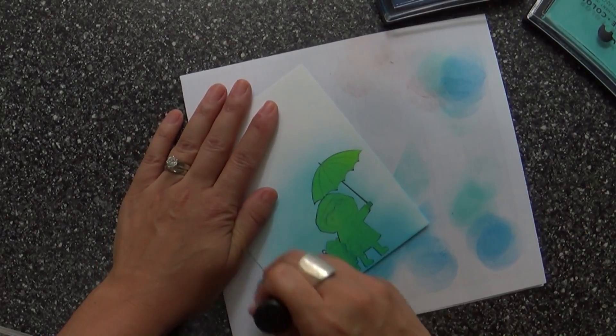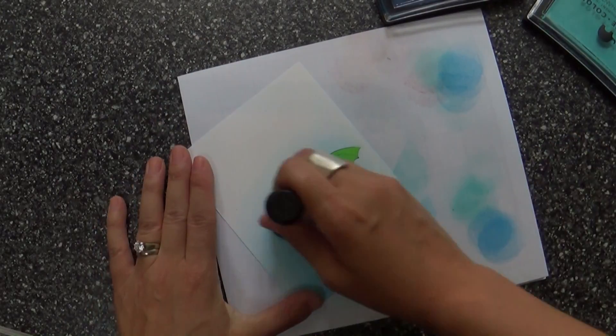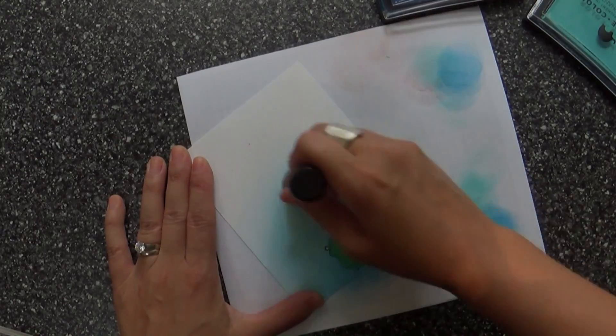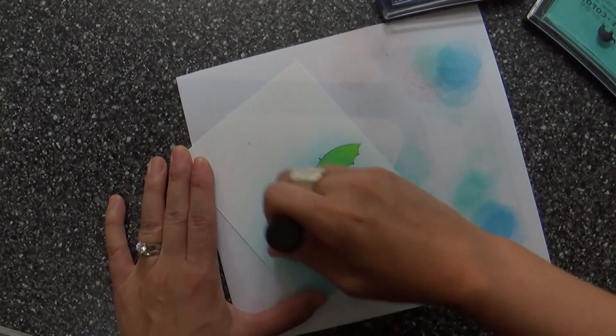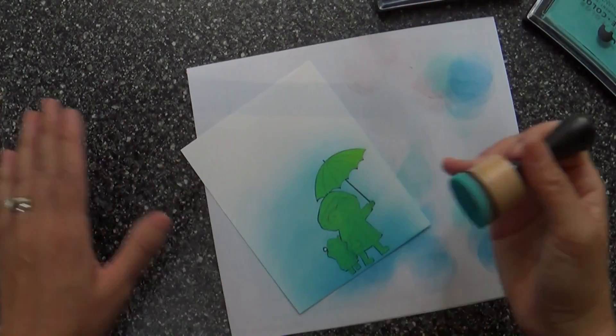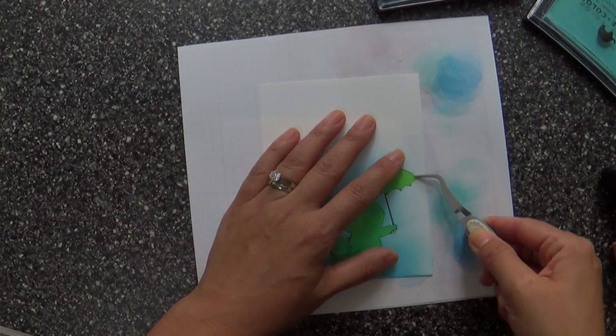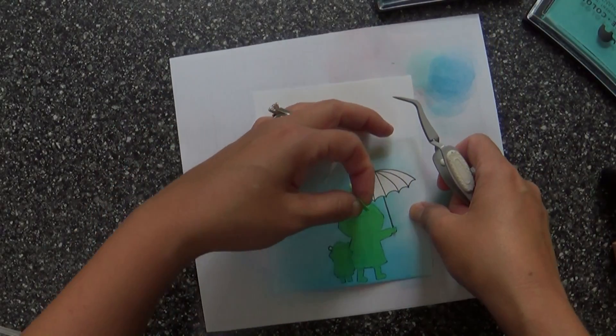So once I get this all inked up the way I want it, I just want it kind of more inked in the bottom. And then on the top, I want it to kind of fade out into just the white cardstock. So I crave white space. I really love that on a card, but I also like to have bright colors.